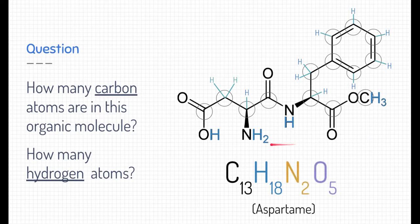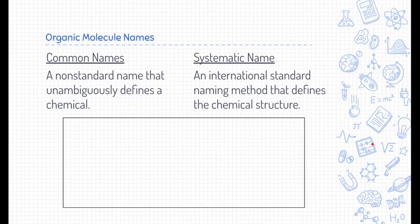Now, if we add the other two elements, the other heteroatoms, nitrogen, there are two of them, and oxygen, there are five of them, we can get a whole compound formula. By the way, this organic molecule is aspartame.